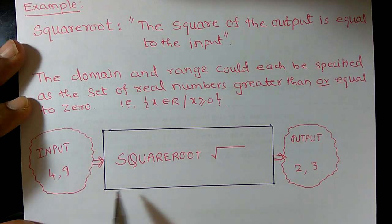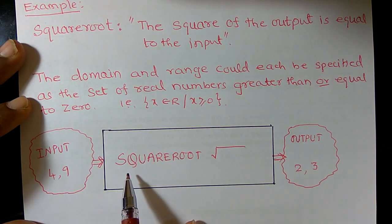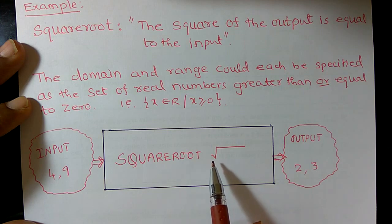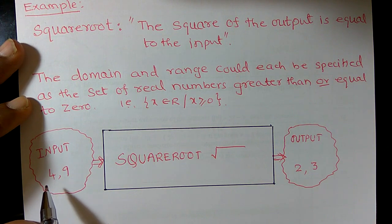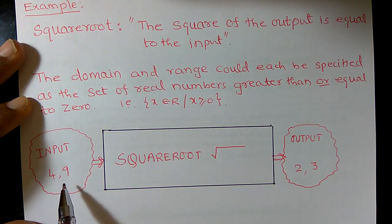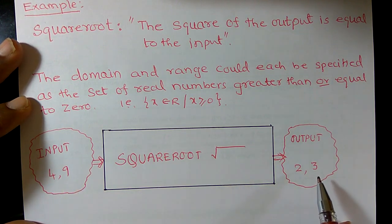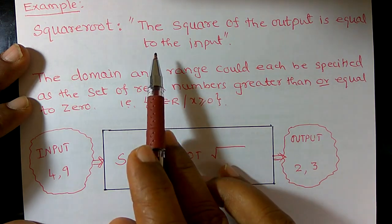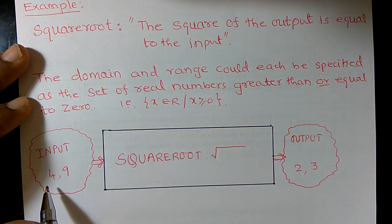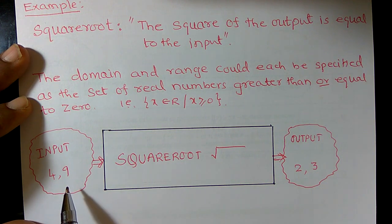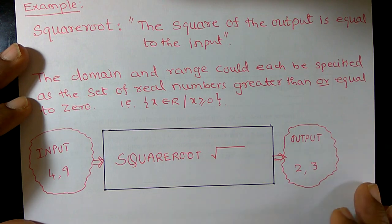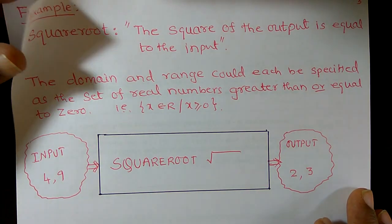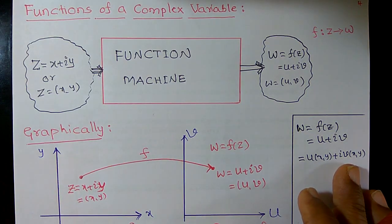So this is my input. And this box is denoted by the name square root, or you can use this symbol. I hope you will get a unique output. Suppose if I input 4, square root of 4 is 2. Suppose if I input 9, what is the square root of 9? 3. And I can verify the definition: 2 square is 4, 3 square is 9. So like that you can input any number, then you will get a unique output. So this is another example of a real valued function.